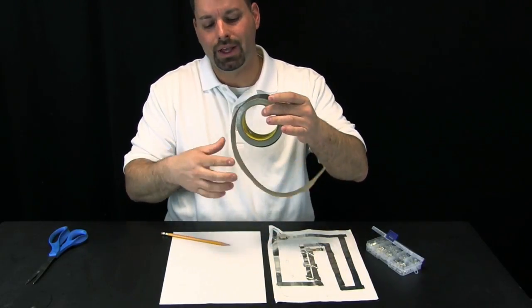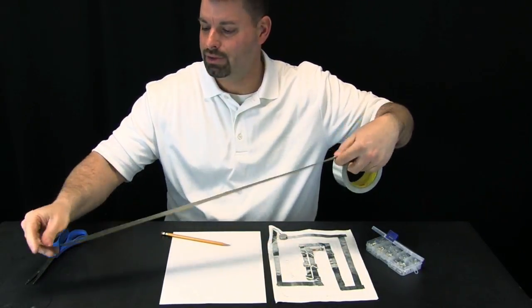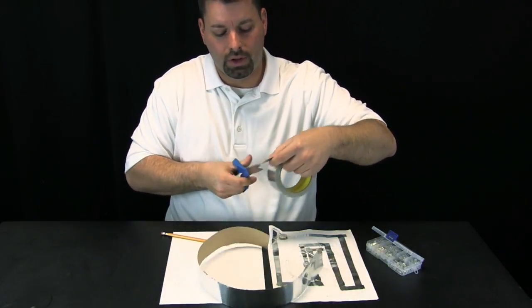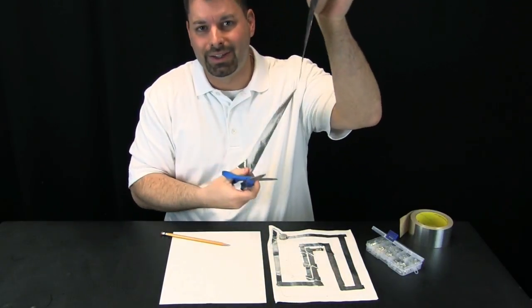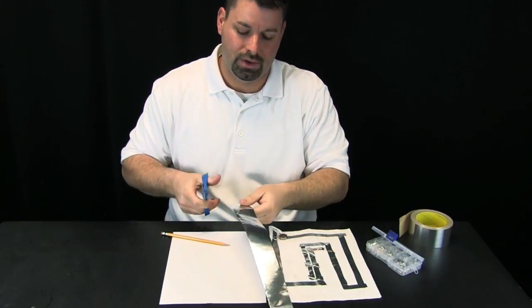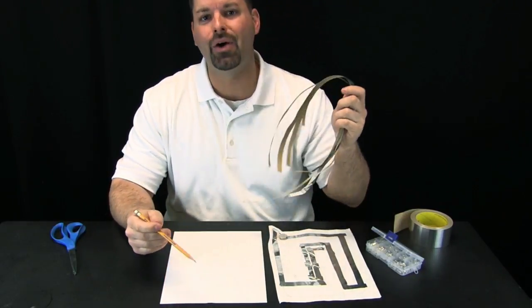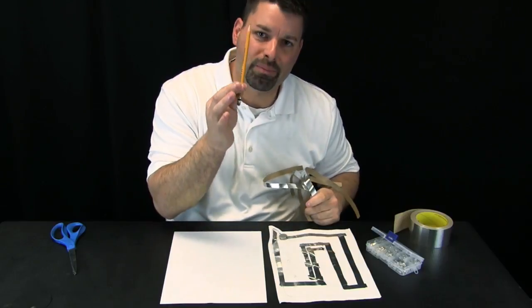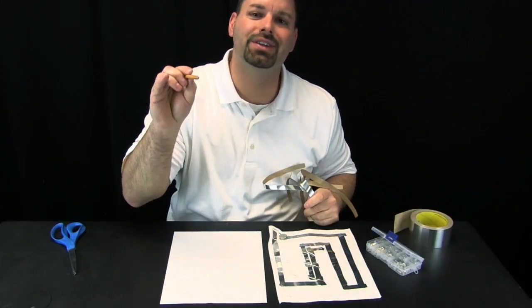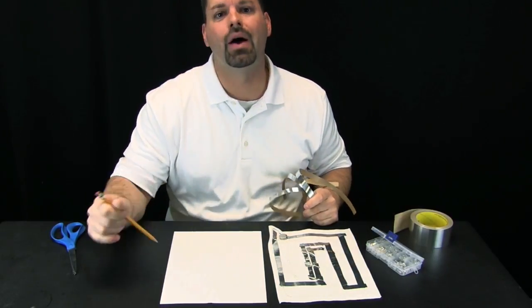So to start, I need to take my metal tape and cut it into strips. I am going to cut off a long section and now I just need to cut this down into strips. So I have my metal tape cut into strips. Now I need to actually draw the circuit with a pencil. We are going to zoom in so you can see more closely how we do this.